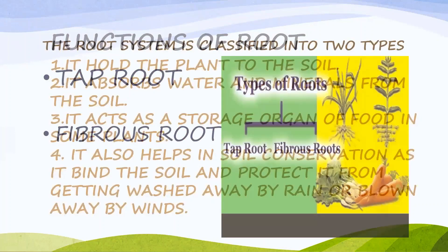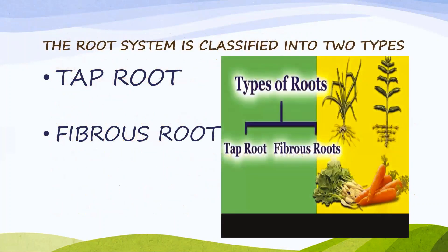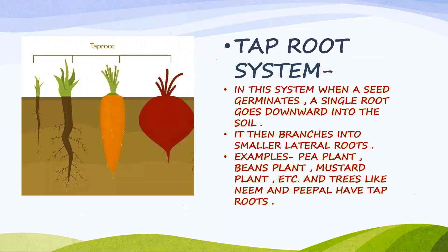The root system is classified into two types: tap root and fibrous root. In the tap root system, when a seed germinates, a single root goes downward into the soil and then branches into smaller lateral roots.